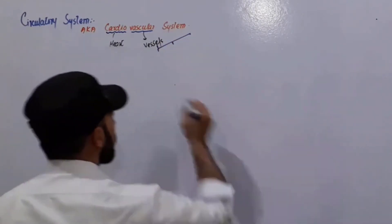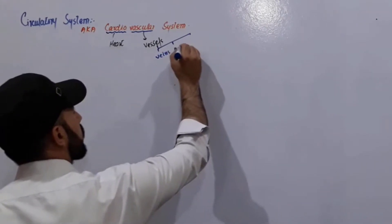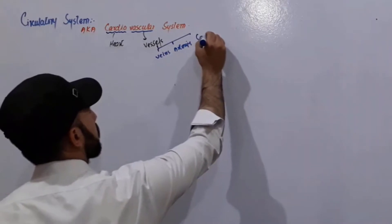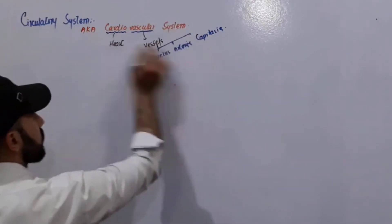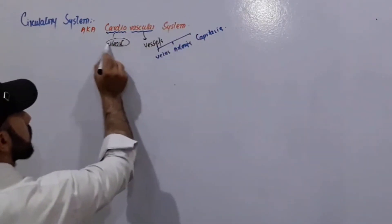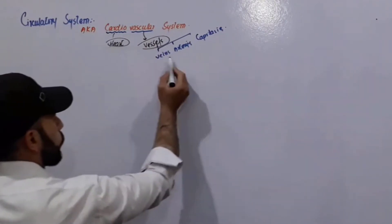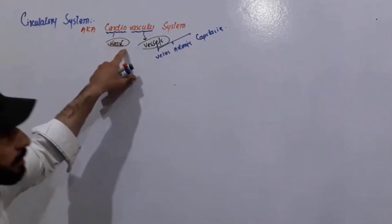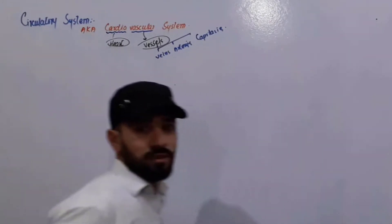In the diagram you can see there are veins, arteries, and capillaries. It is called the cardiovascular system because it is a system that comprises of the heart and vessels — heart, veins, arteries, and capillaries. 'Cardio' refers to the heart and 'vascular' refers to all those vessels which are part of this system.